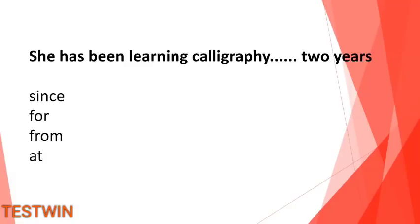For this tense, we start at a particular time before and continue up to the present. We use "for" with a time period — for 2 years, for 10 years, for 1 month, for 10 hours.